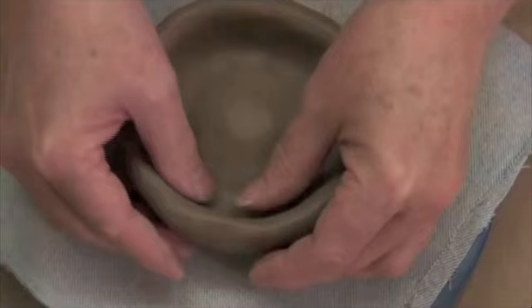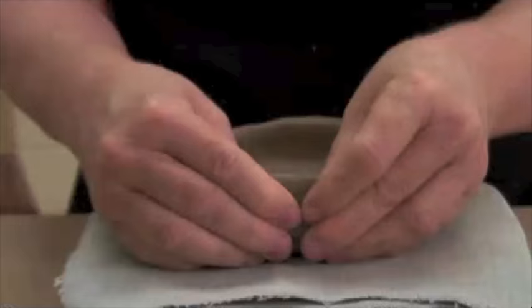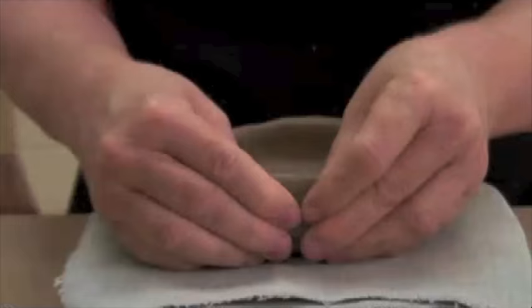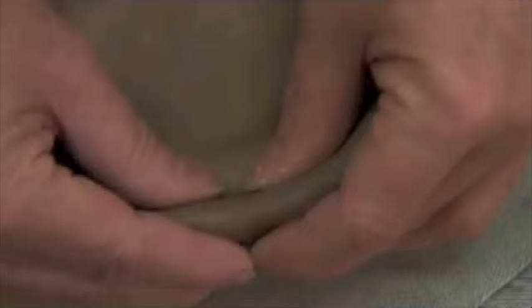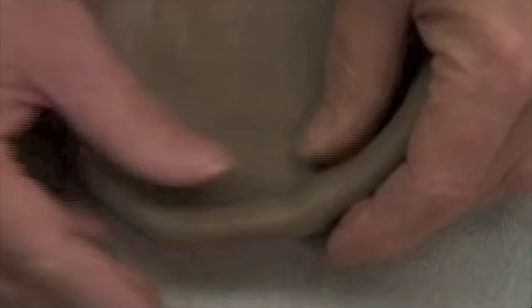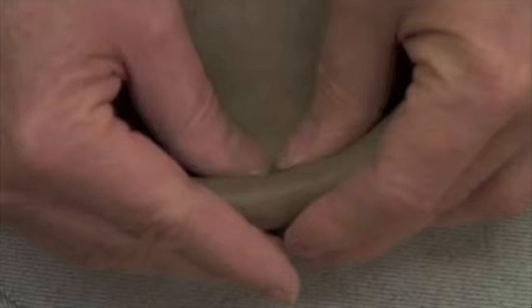As the fingertips move the clay together and up, the thumb receives and seals. Don't pinch. At the end of the first move, there's a subtle high point. Each move begins on the crest of the high point of the previous move. Your fingertips are apart and then moving together. The fingertips are moving, the thumb is just receiving and sealing, holding stable.